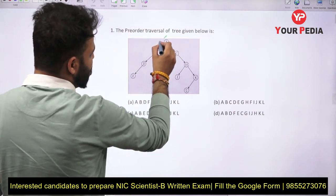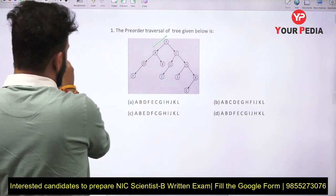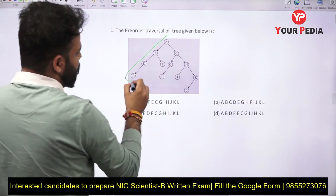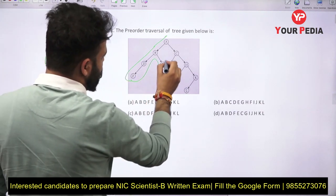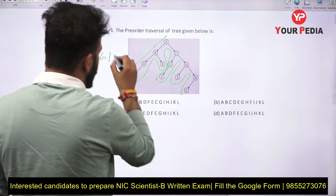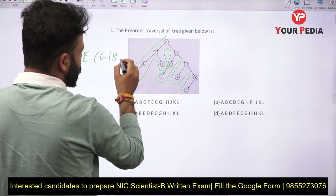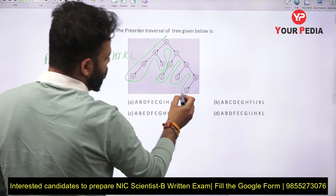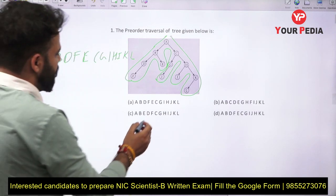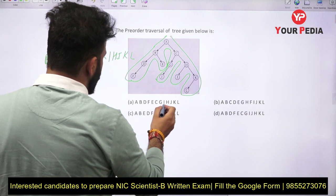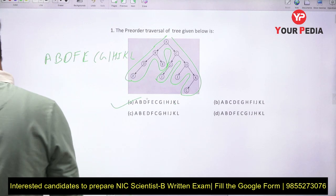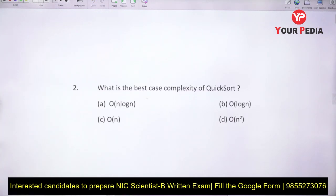If you traverse the tree, first A will come, then B, D, F, then we go to E, C, G, I, H, J, K, L. So the pre-order for this tree is A B D F E C G I H J K L, and the correct option is option A.